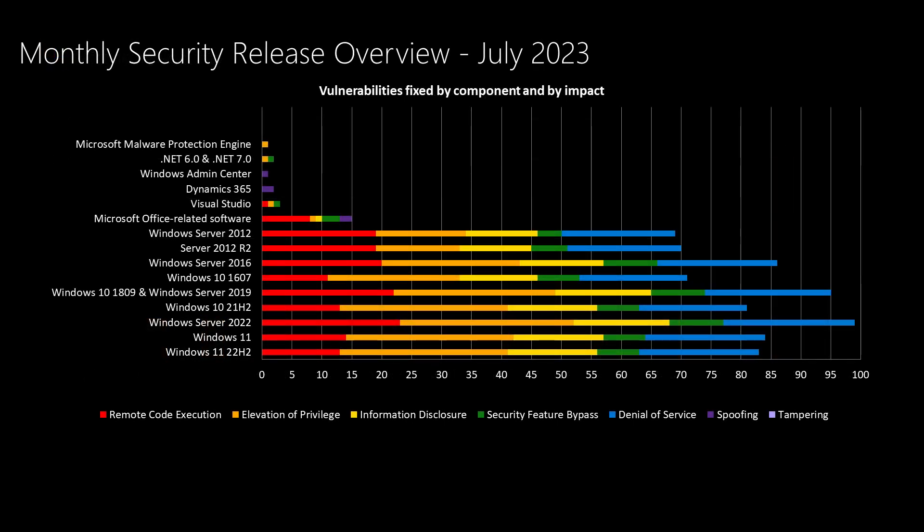Now let's take a look at this month's release by itself. Those of you familiar with this video will recognize this slide where we put the Windows products that are serviced every single month towards the bottom of the slide, and products that are not serviced as much or every single month towards the top of the chart. Windows has quite a few vulnerabilities being addressed this month — we've been averaging between the mid-thirties and mid-forties depending on the specific SKU, and this month it's much higher than that. Moving up the chart, we see Microsoft Office with 15 vulnerabilities, Visual Studio, Dynamics 365, Windows Admin Center, .NET 6.0, .NET 7.0, and Microsoft Malware Protection Engine.